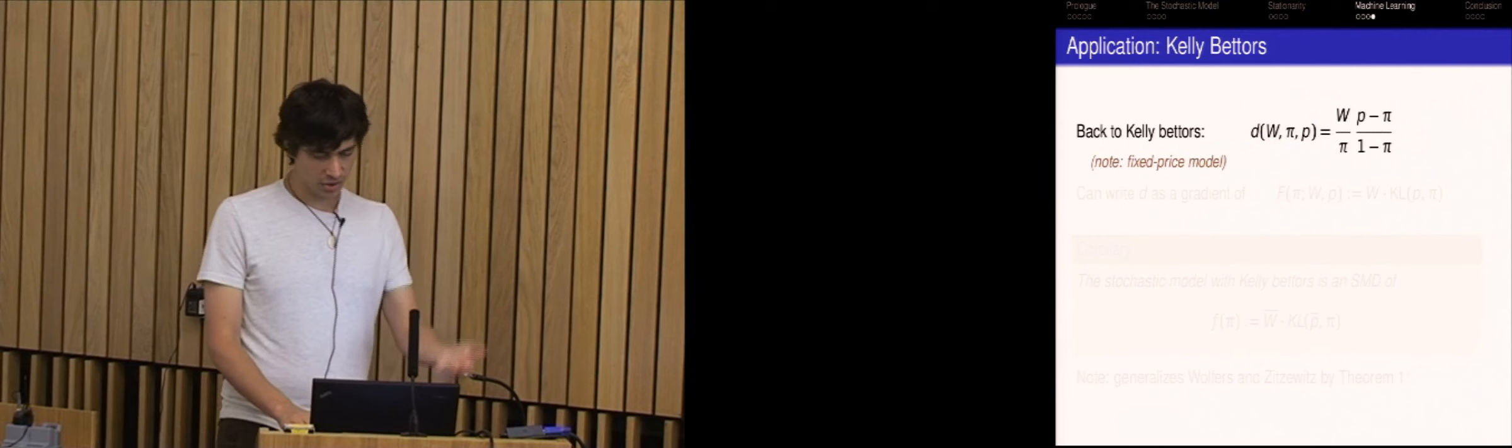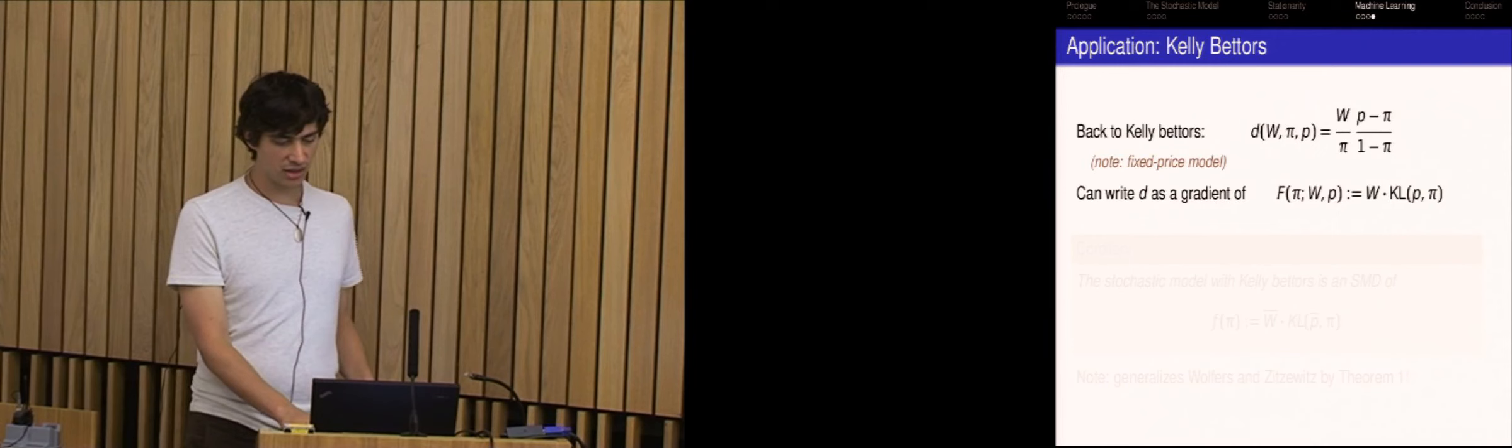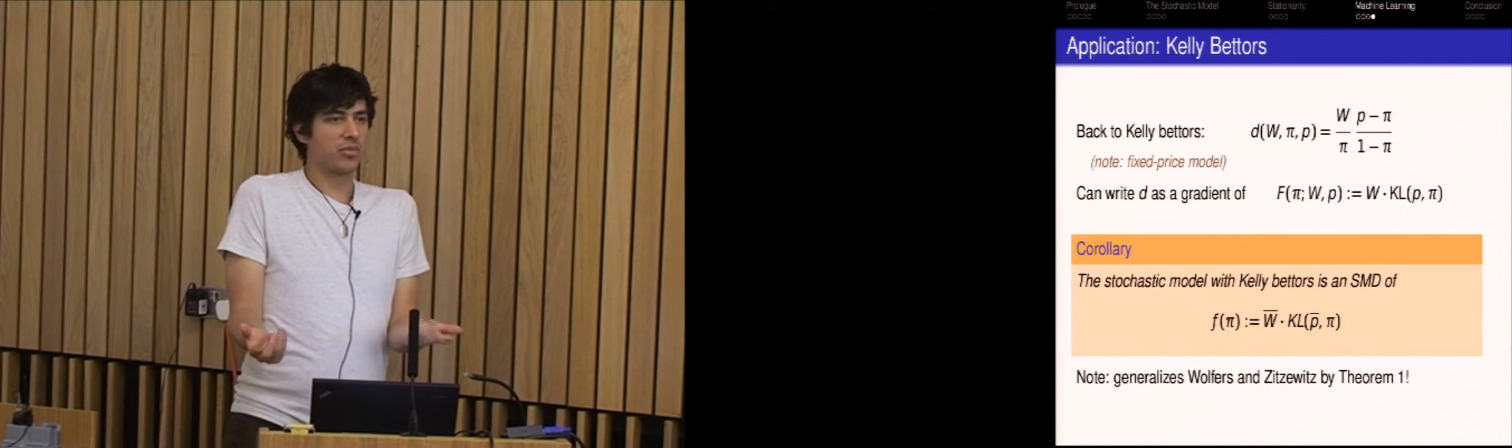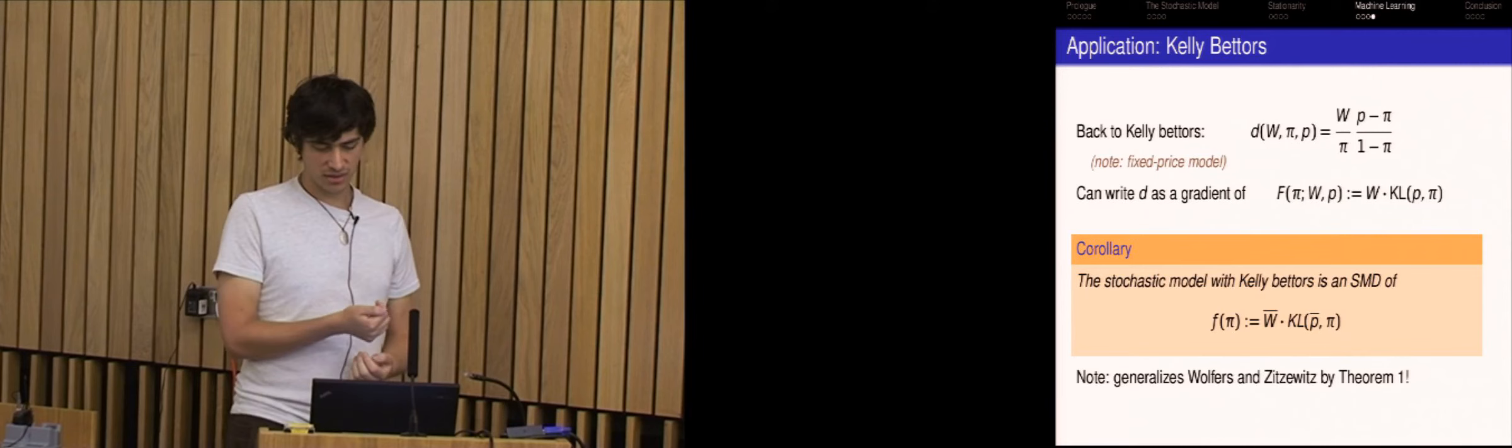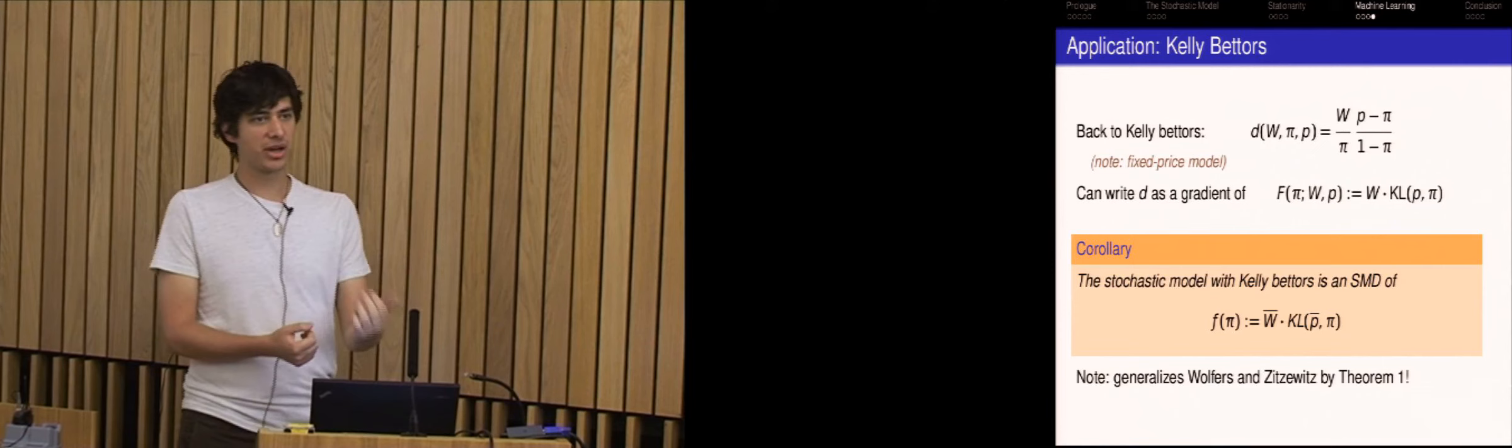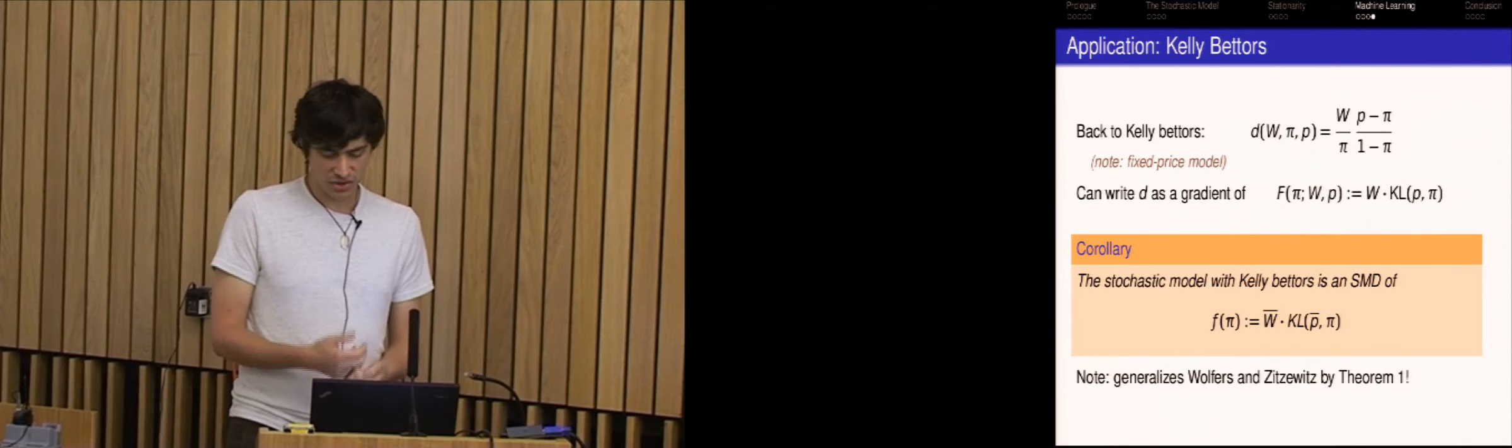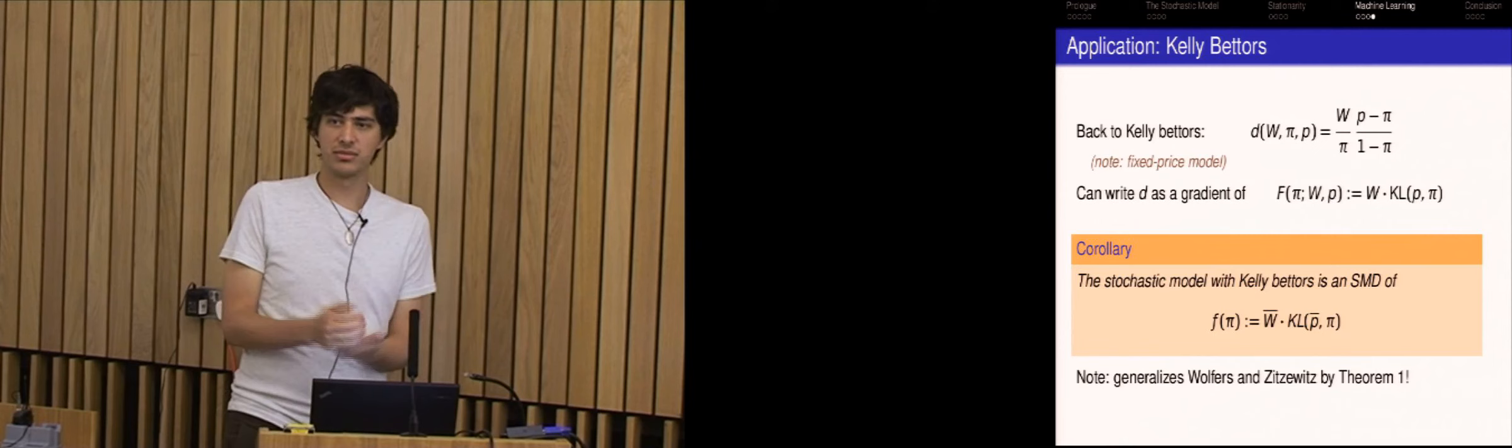Suppose the market maker instead has to put up prices and say you can buy or sell whatever you want at this price. And only after you're done, I'm going to update the prices. Then actually both the updates and the losses match up in these two settings, which is to say that they're exactly the same process. So an observation from machine learning theory is that if the losses are gradients of some function, then actually follow the regularized leader is mirror descent as Jake alluded to earlier.